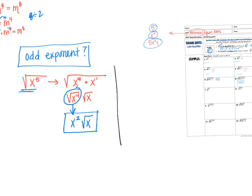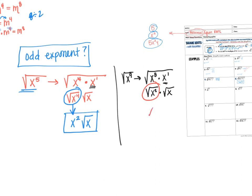Let's try another one: the square root of x to the ninth. Eight is the even number right below 9, so we rewrite this as x to the eighth times x to the first. It's always x to the first, because going down one leaves only one remaining to make the original number — 8 plus 1 is 9. Then we split them up: the square root of x to the eighth is x to the fourth power, since you divide the exponent by 2. So the answer is x to the fourth times the square root of x.